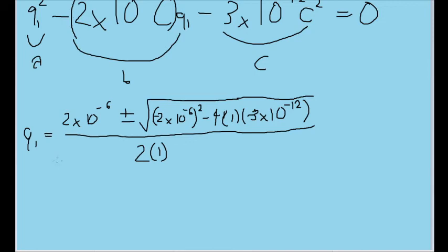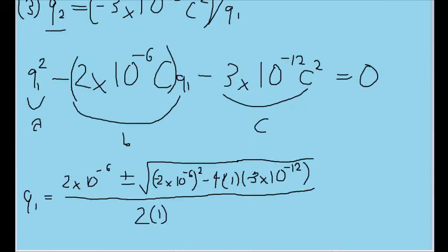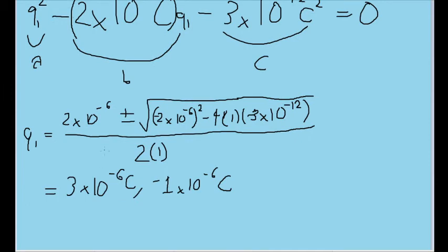As per the quadratic formula, Q1 should be equal to the negative B term plus or minus the square root of B squared minus four times A times C, and all of it is divided by two times the A term. Depending on whether or not you use the plus or the minus, we of course get two values for this, as per usual with the quadratic formula. We get an answer of either three times 10 to the negative six Coulombs or negative one times 10 to the negative six Coulombs. So we get a positive and a negative value.